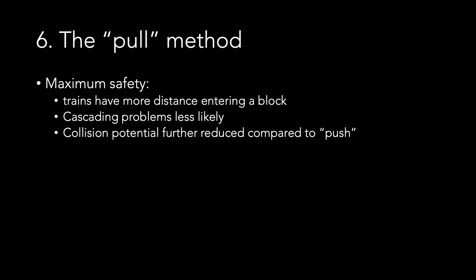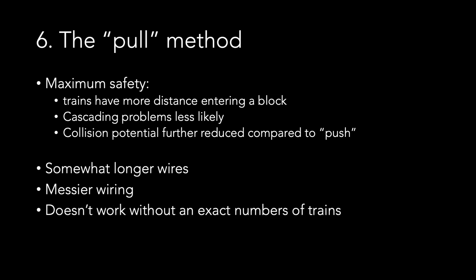There's a small disadvantage though, which is that it requires longer wires and therefore the wiring may be messier. And the system doesn't work without a near exact number of trains for which it was designed. So if you intend to run a single train on the same track at some point, this method might not be for you. Or you may need to install some additional wiring to be able to enable or disable the blocks or some switching tracks or activate or deactivate some signals. I won't go into this in this video, but it's something to be aware of.